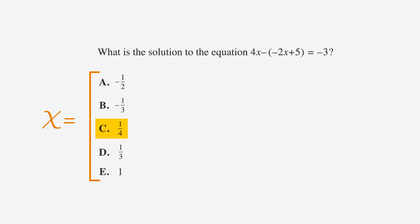Let's start with the middle choice. Plug choice C, 1 fourth, in for x. If we do that, we get 4 times 1 fourth, minus the sum of negative 2 times 1 fourth, plus 5.